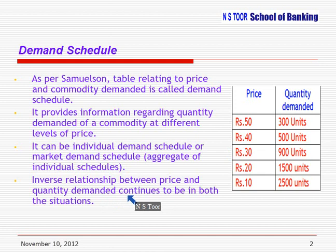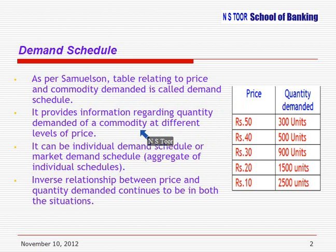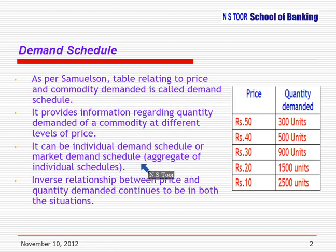To recap: a table relating price and quantity demanded is called a demand schedule. It provides information regarding quantity demanded of a commodity at various levels of price. Demand schedule can be an individual demand schedule or an aggregation of individual demand schedules called the market demand schedule. The inverse relationship between price and quantity demanded applies in both cases.